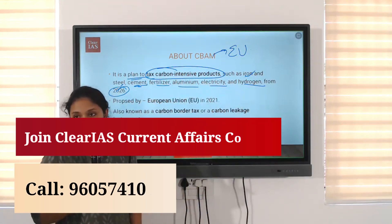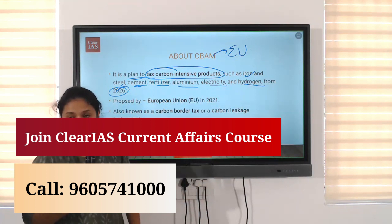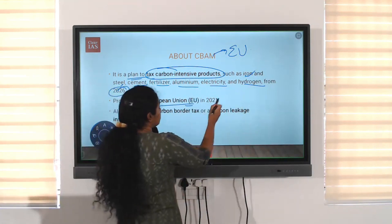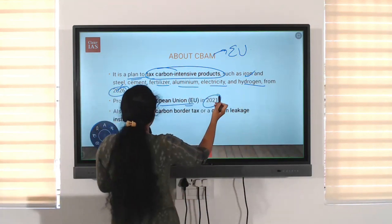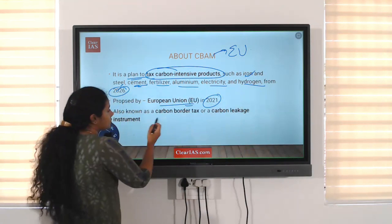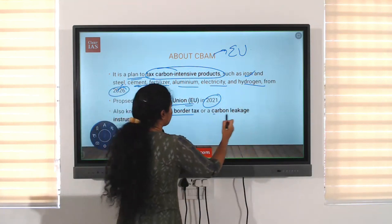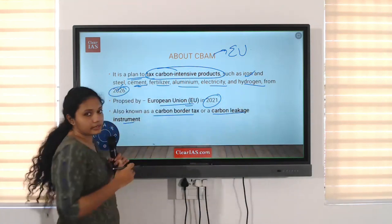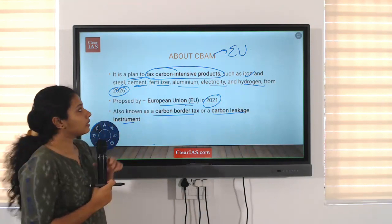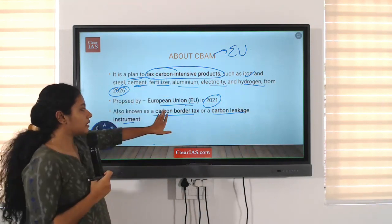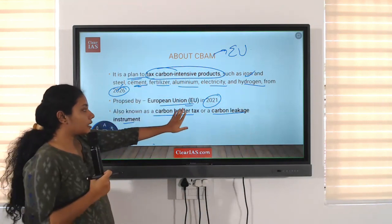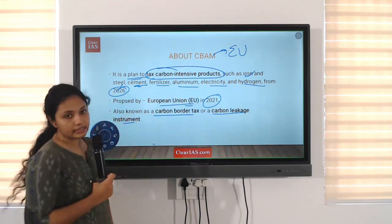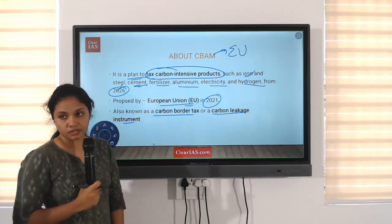This is by the European Union. The EU is planning to tax carbon-intensive products like steel, cement, iron and steel, aluminum, electricity, hydrogen, etc. This was passed by the European Union in 2021. It is also known as the carbon border tax or carbon leakage instrument.